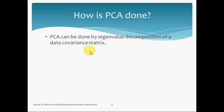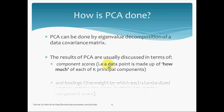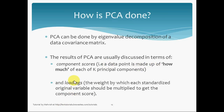How is PCA actually done? The mathematical method is eigenvalue decomposition of the data covariance matrix. The results of PCA are discussed in terms of the component scores — that is, a face image is described by how much of each of the k eigenfaces makes it up. And the loadings, that is the weights, form the weight vector I just showed you before.